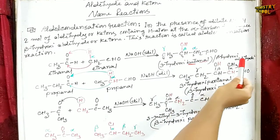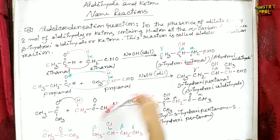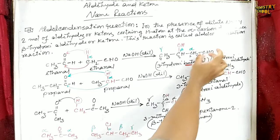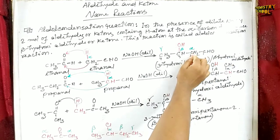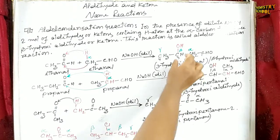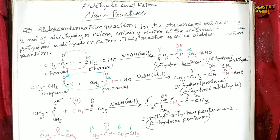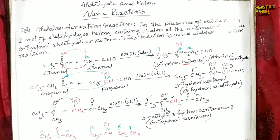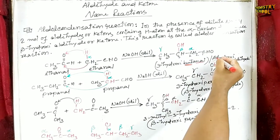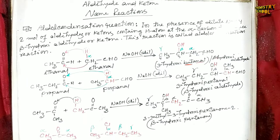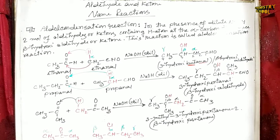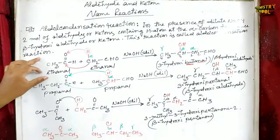The common name of this compound is beta-hydroxy aldehyde. The CHO group is the functional group of aldehyde, so CH2 is the alpha carbon and the third carbon is the beta carbon. Since the beta carbon contains the hydroxy group, the general name of this compound is beta-hydroxy aldehyde. Now what will be the statement of aldol condensation reaction?